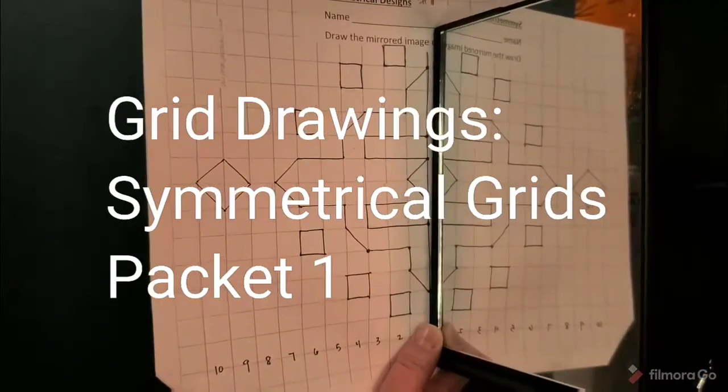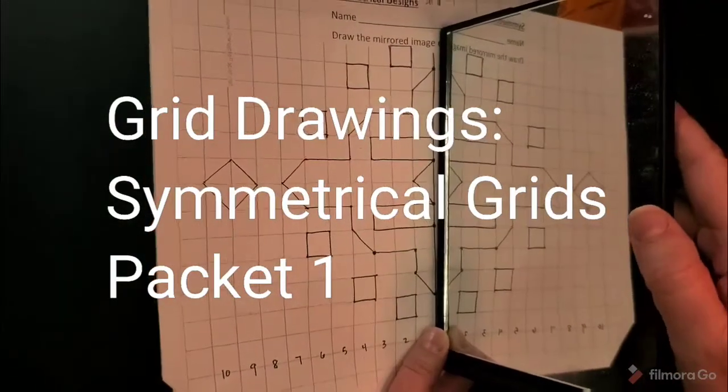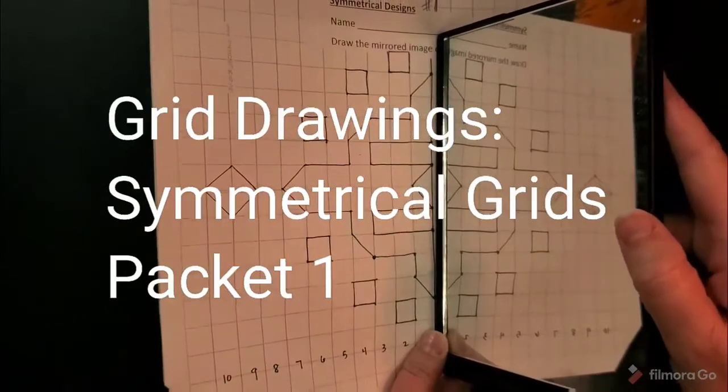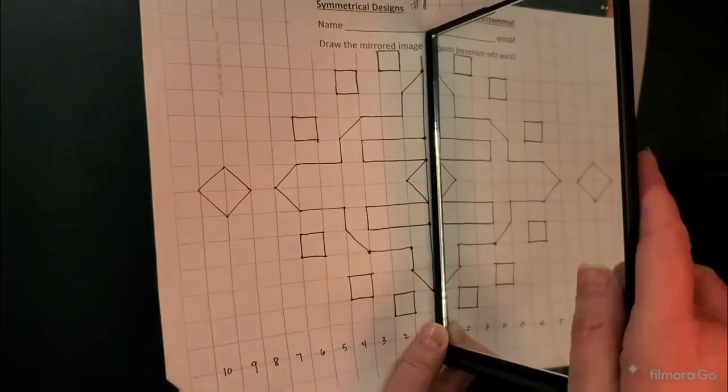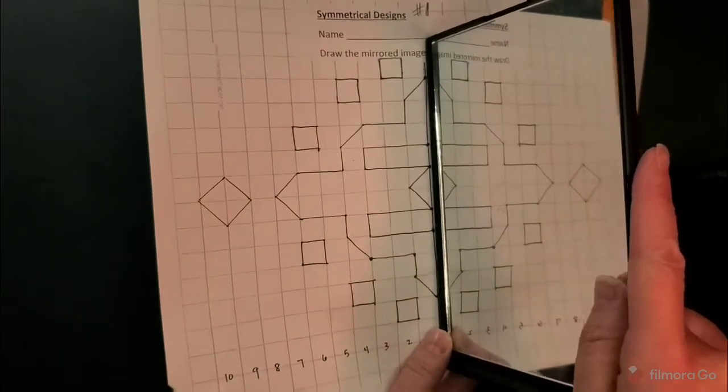Hello! We're going to do something different with grid drawing today. What I have here is a mirror that is showing the other side or the reflection of it, so it's making it symmetrical.